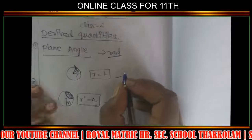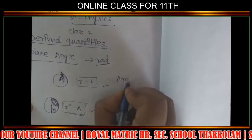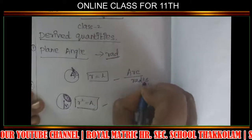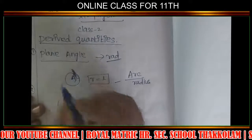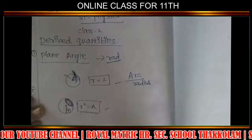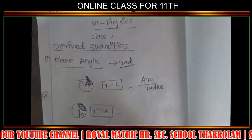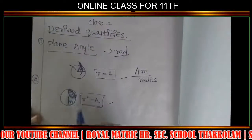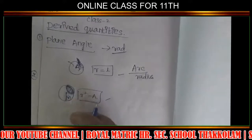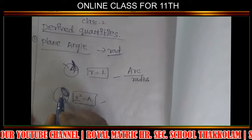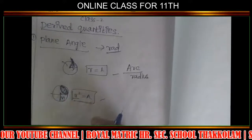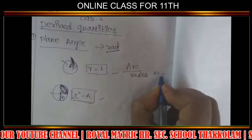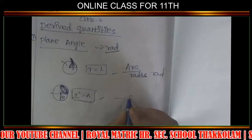The plane angle formula is arc length divided by radius. R means the arc length in the circle, divided by radius. The solid angle formula is surface area divided by radius squared. The unit for plane angle is Radian, and for solid angle is Steradian.